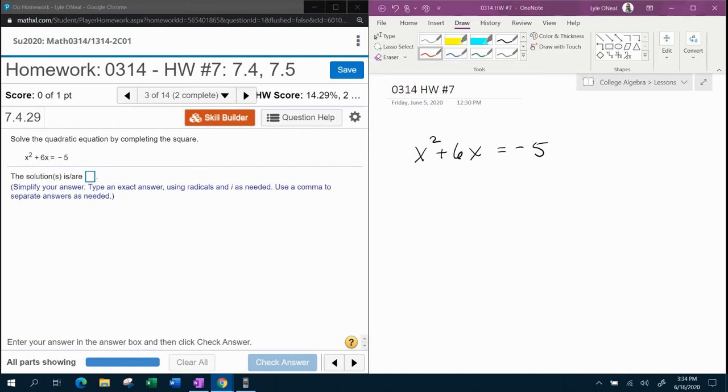Normally when you solve a quadratic, you want it to be equal to zero. But when you're completing the square, you do actually want the constant to be on the other side by itself. This quadratic is already well on its way to completing the square. Instead of us having to move the constant over, the constant is already on the other side.